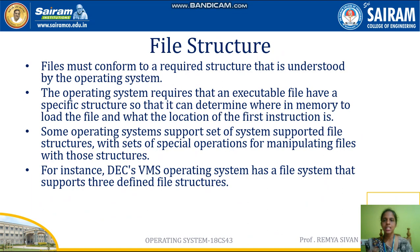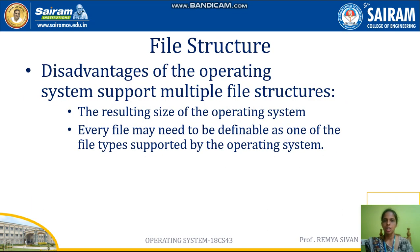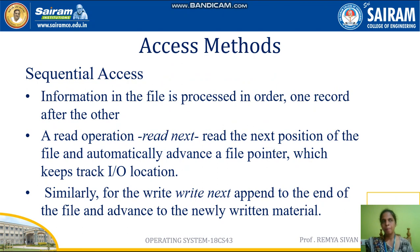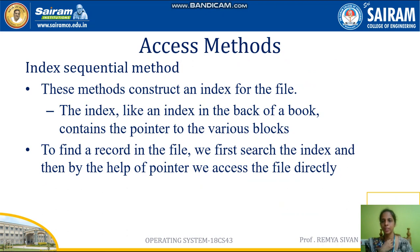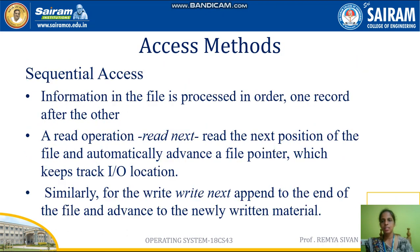The first topic is file structure, where each file must conform to the required structure. The second topic is access methods — how to access data from files. There are different access methods: the first is sequential access, the second is direct access, and the third is index sequential method. Sequential access means you have to read data record by record, in order. It is not possible to read in-between data. A read operation is termed 'read next' and a write operation is termed 'write next'.